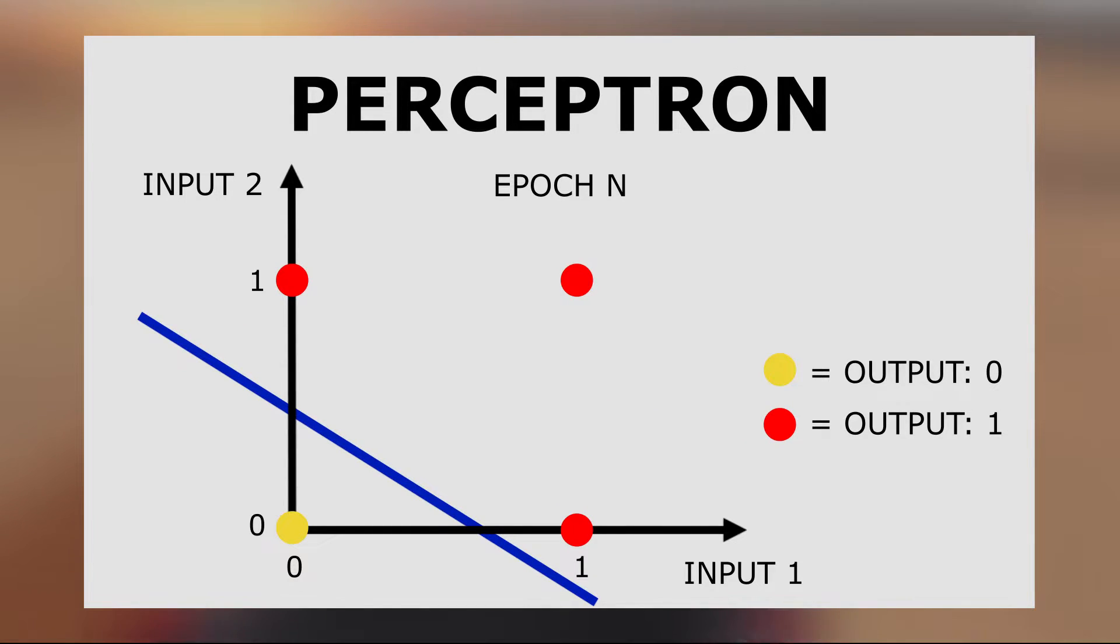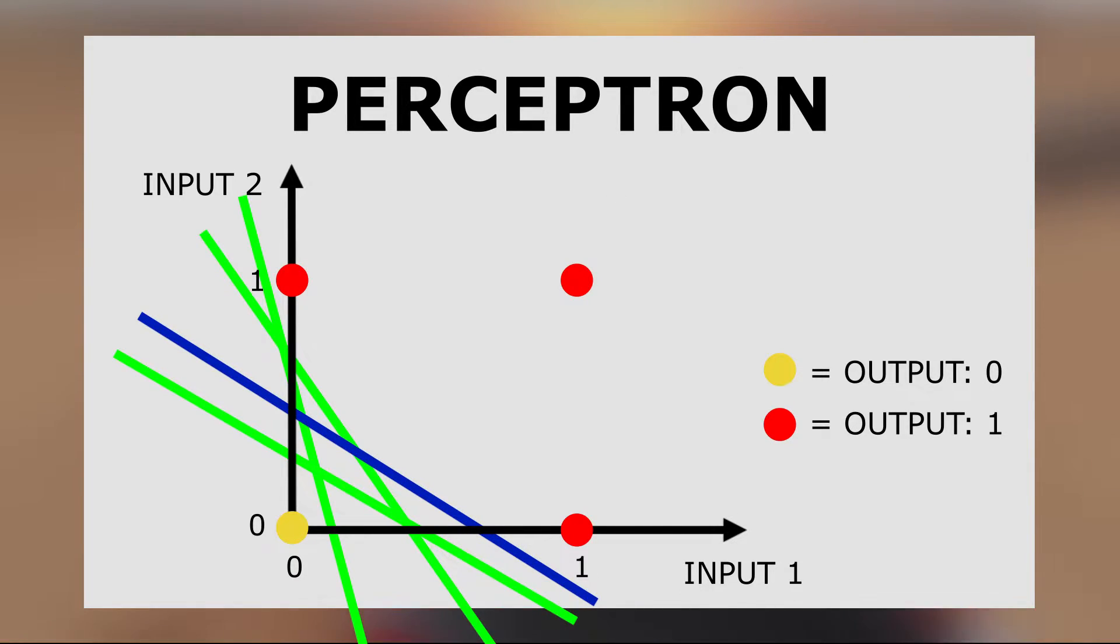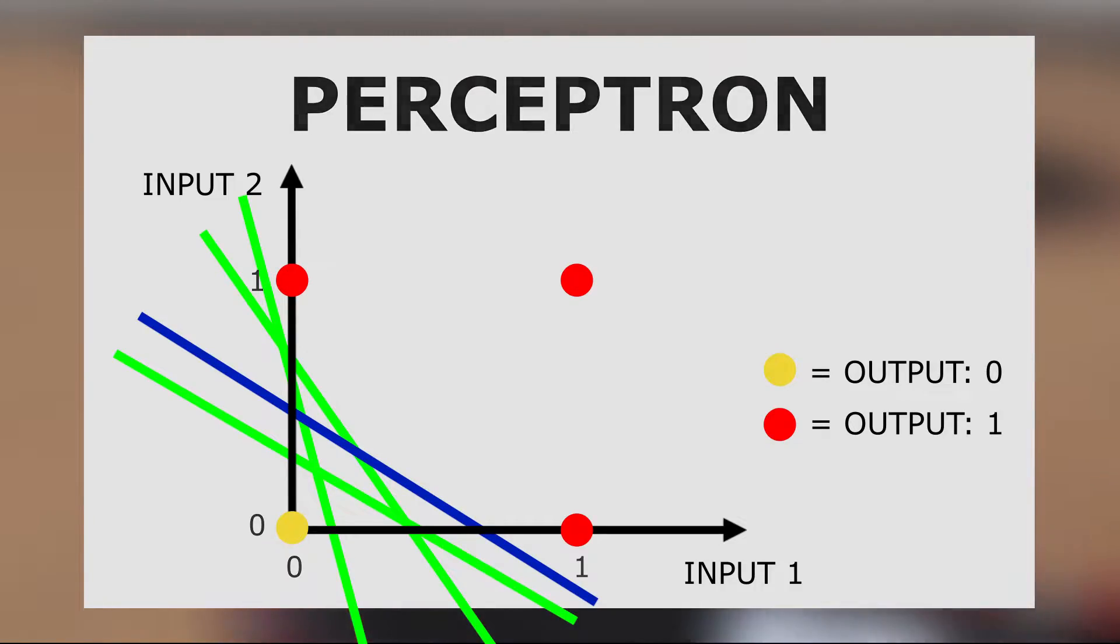Updating weights directs the line closer to separate those values. As you can see, there is not just one set of weights that give correct values, because we can have many different lines that separate outputs correctly. So every time you start a new learning process with the same training set, you will get different weights.